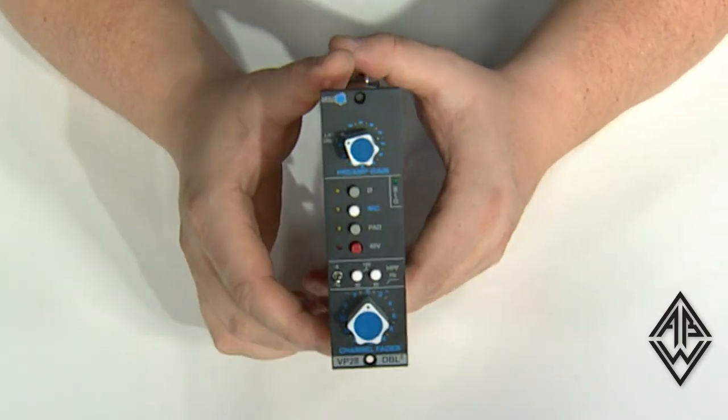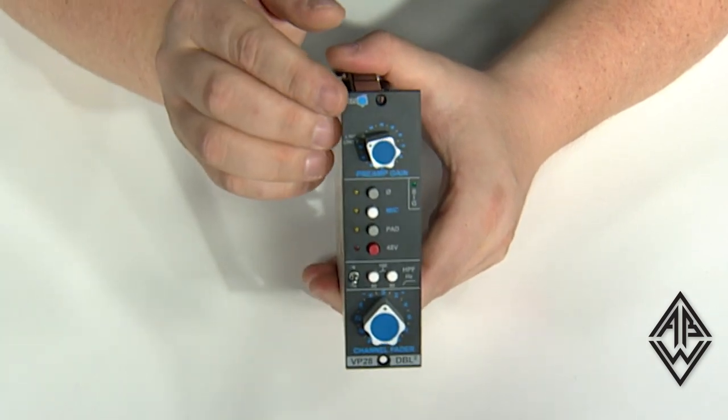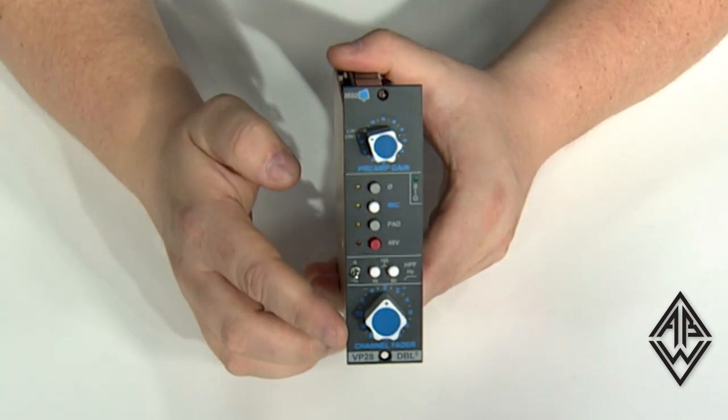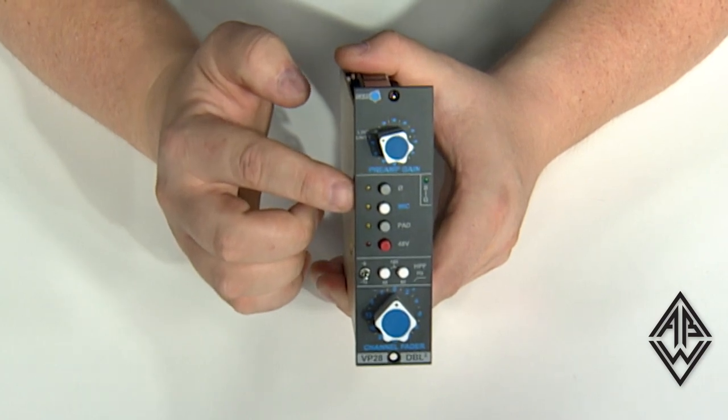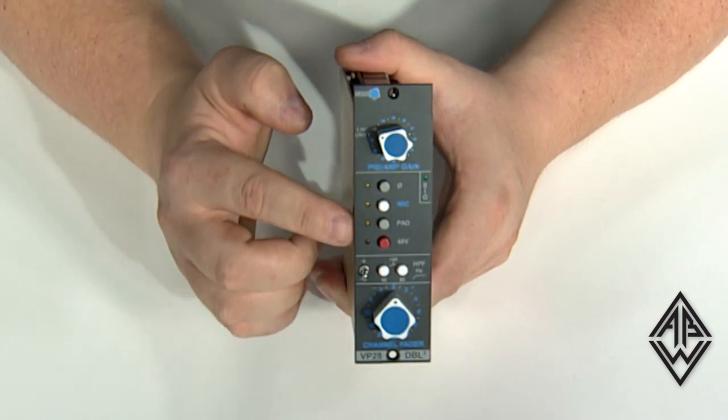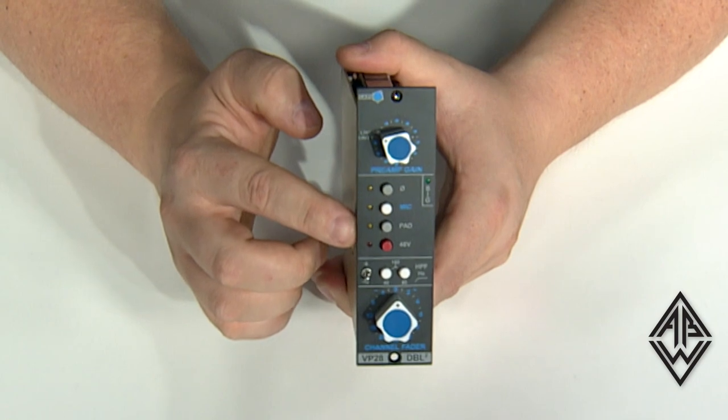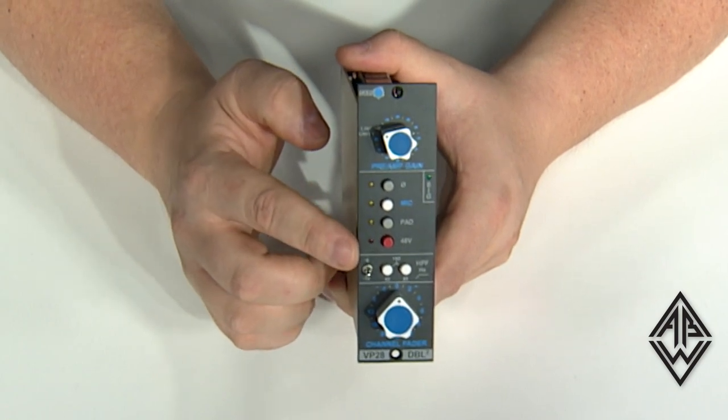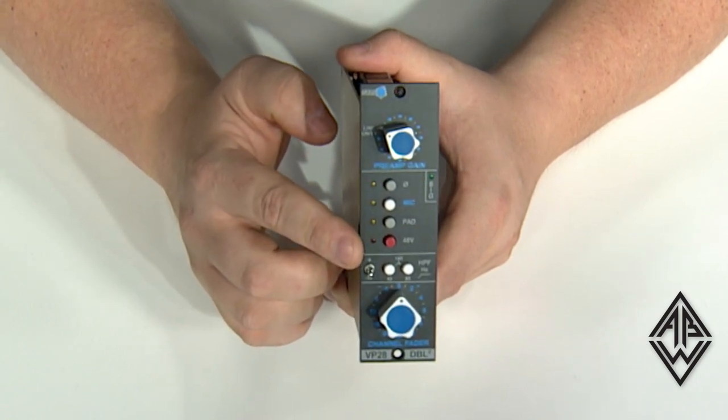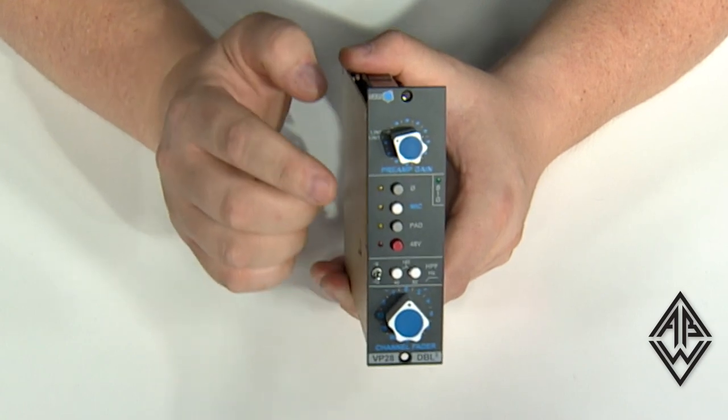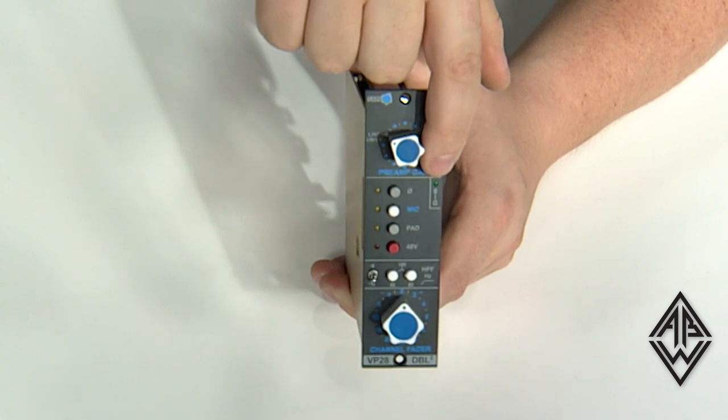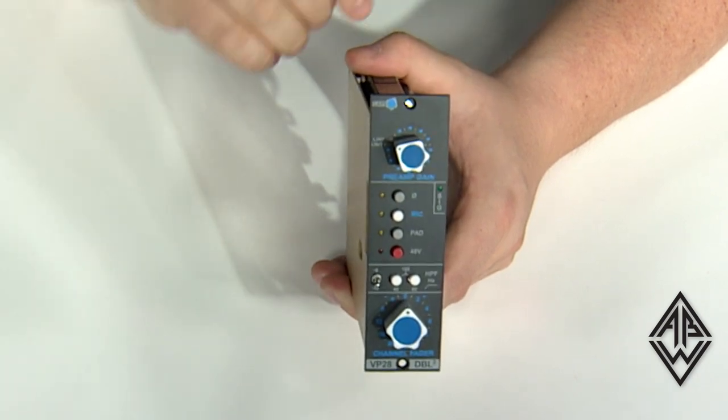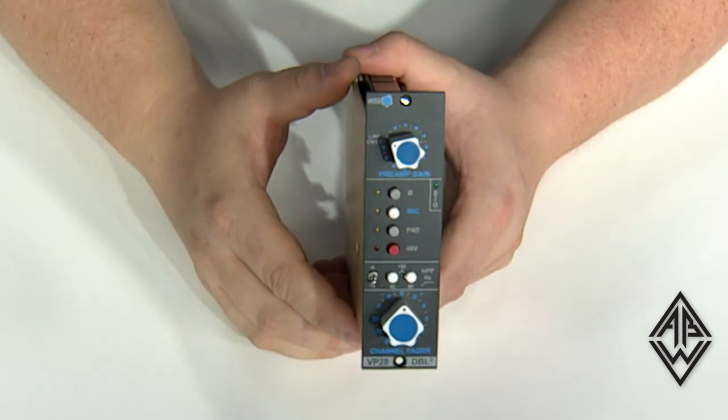On the front we see we have a preamp gain pot and a channel fader pot. We have a polarity switch, a mic switch, a 20 dB pad, and a phantom power switch. We also have on the side here a very small signal LED, which can help you see if you have any signal going through the preamp, especially at a long distance.